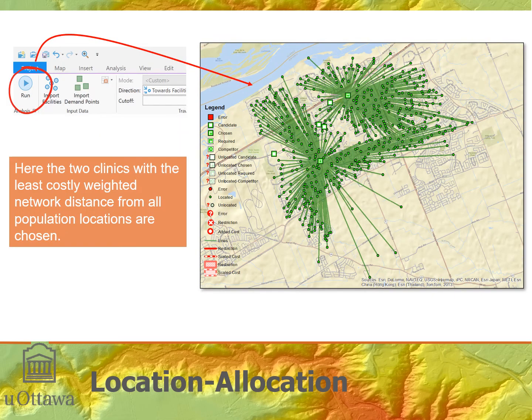The output geometry is set to straight lines, and after running, the result shows two selected locations. These two locations, according to this location allocation problem, are the optimal locations for providing the two medical services — blood drawing and x-rays. They maximize the population served and minimize the travel time.